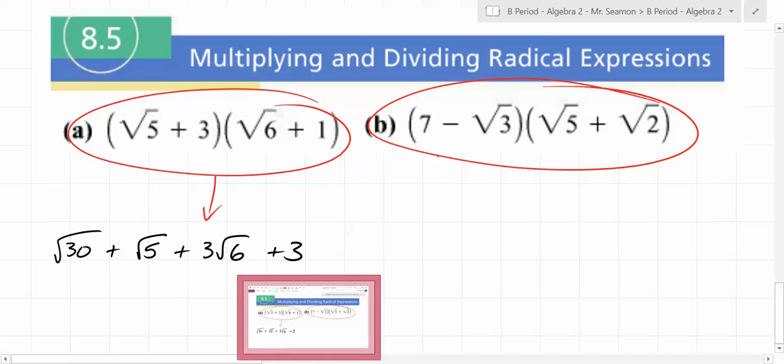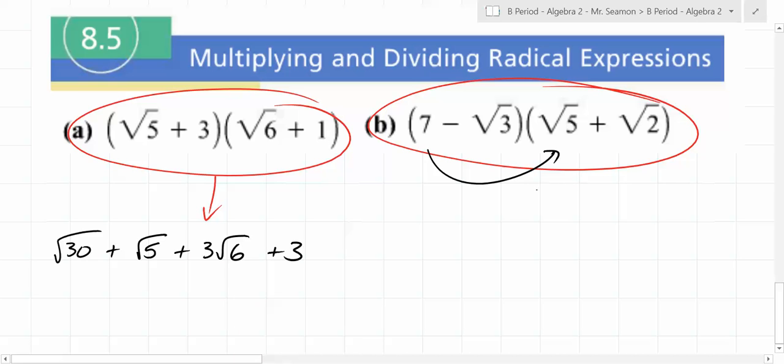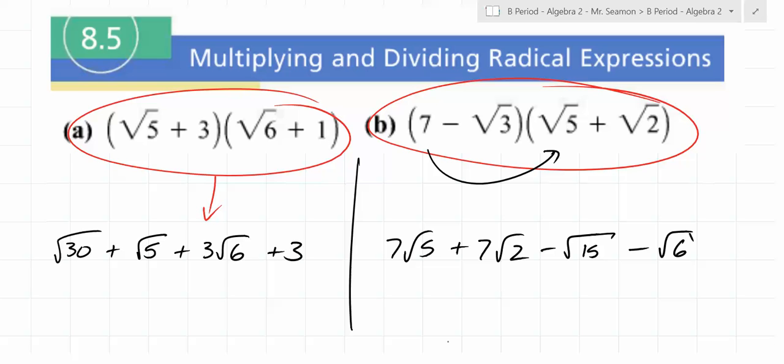What about this one? What's 7 times root 5? What's 7 times root 2? 7 times root 2. Oh, negative. What's root 3 times root 5? Negative root 15 and negative root 6. You're done. There's nothing else that can be done. If you started factoring and if you started doing creative stuff, what would you end up back at? The same thing.